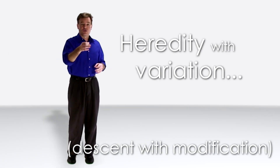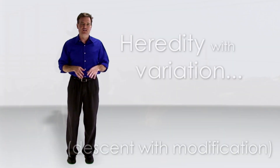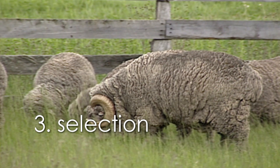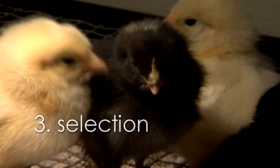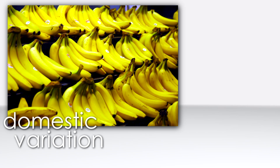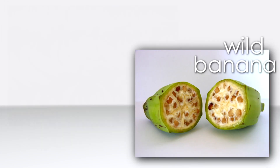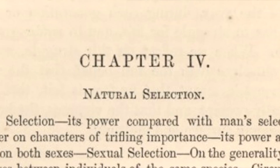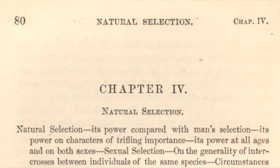Heredity with variation is straightforward, but Darwin's next insight is the clincher. As he explains in chapter one, we humans select individuals from domestic herds and flocks based on favored traits. Variations that we like are selected and propagated, while variations that we don't are not. Chapter three outlines the struggle for existence, and chapter four rocked the world with the words natural selection.